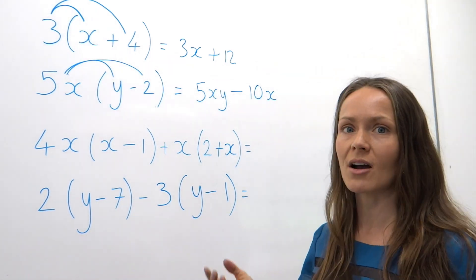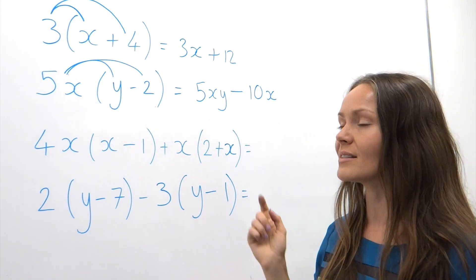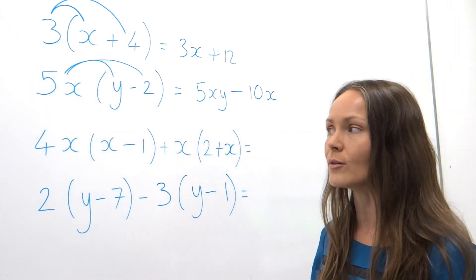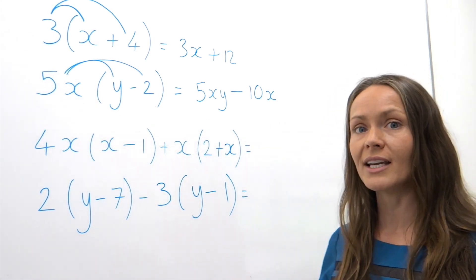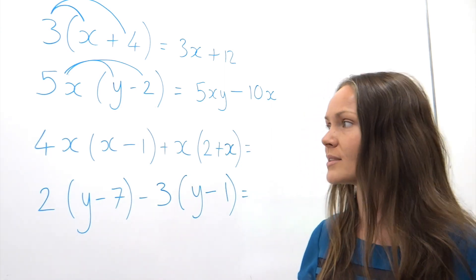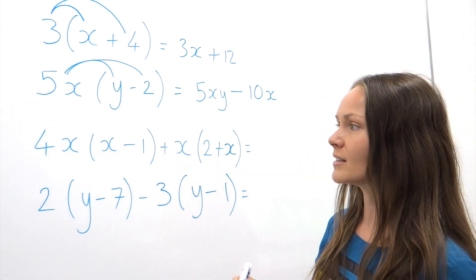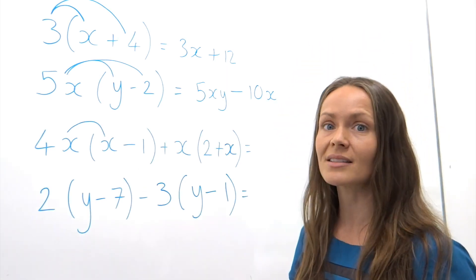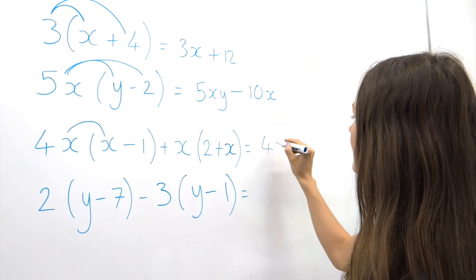In the next two examples, it's a little bit harder because we've got two sets of brackets that we want to multiply out, and at the end hopefully we'll be able to simplify some terms. In the first bracket, 4x multiplied by x is 4x squared, so I'm going to write that down.